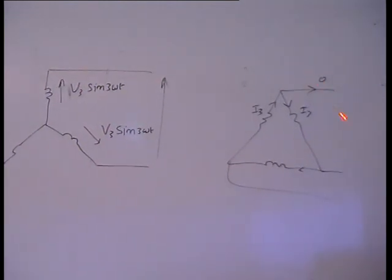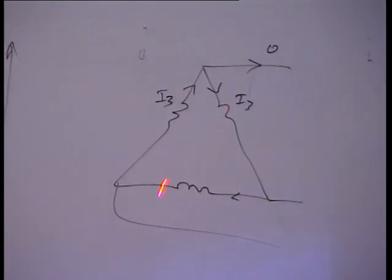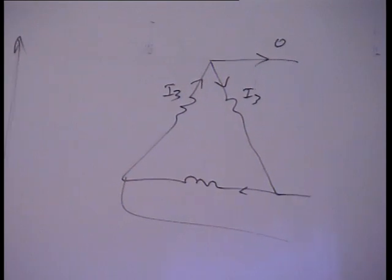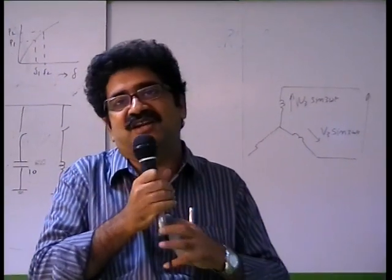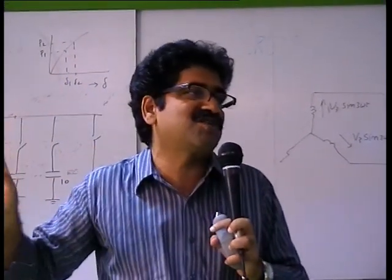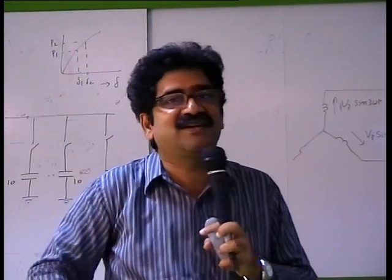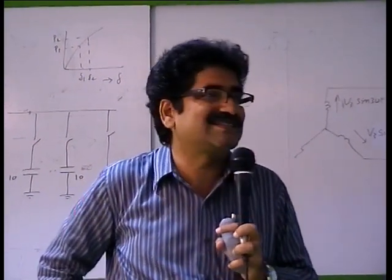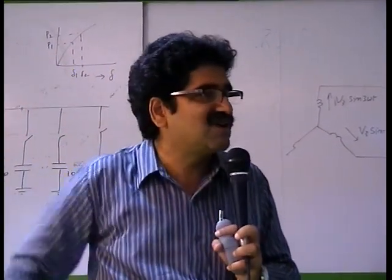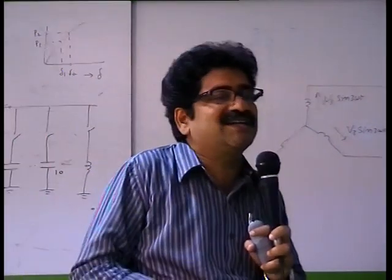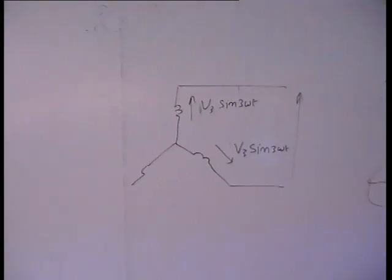In delta, the third harmonic voltages will circulate a current, but they are restricted within the delta — they do not come outside. It's like family affairs: internal problems should stay within the house and not come out. Delta is simply your household system. So in the case of delta, the harmonics circulate within delta and will not come out. In general, whether it is star connected or delta connected, third harmonic is harmless.